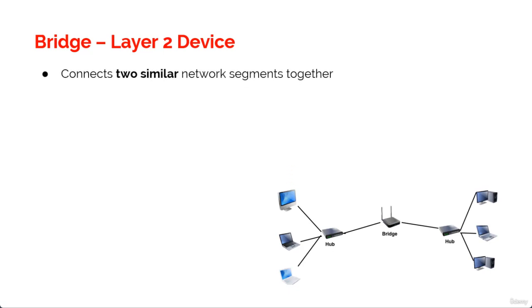A bridge, specifically a transparent bridge, is a network device that connects two similar network segments together. Its primary function is to keep traffic separated on either side of the bridge, breaking up the collision domains as you can see on the screen.